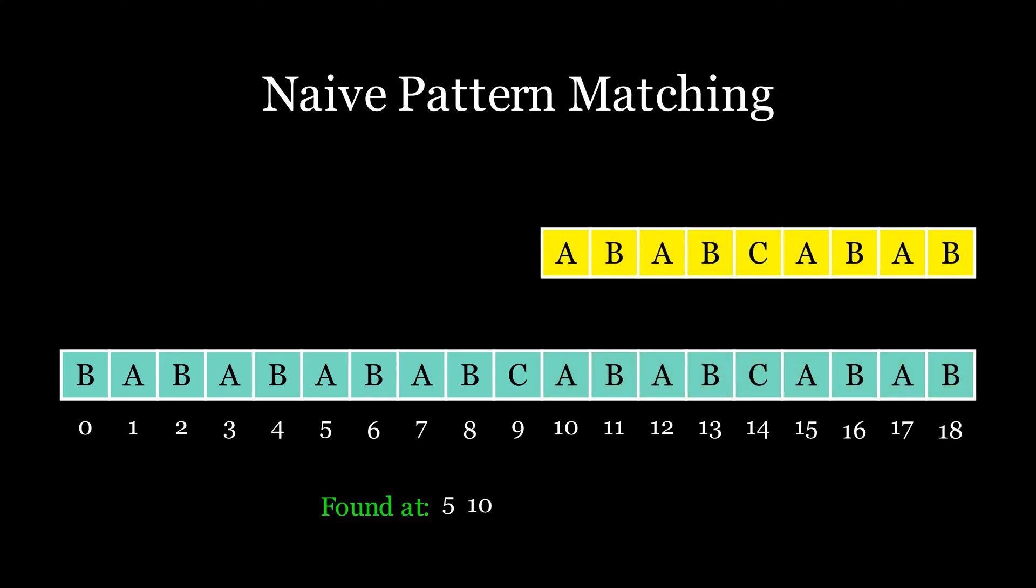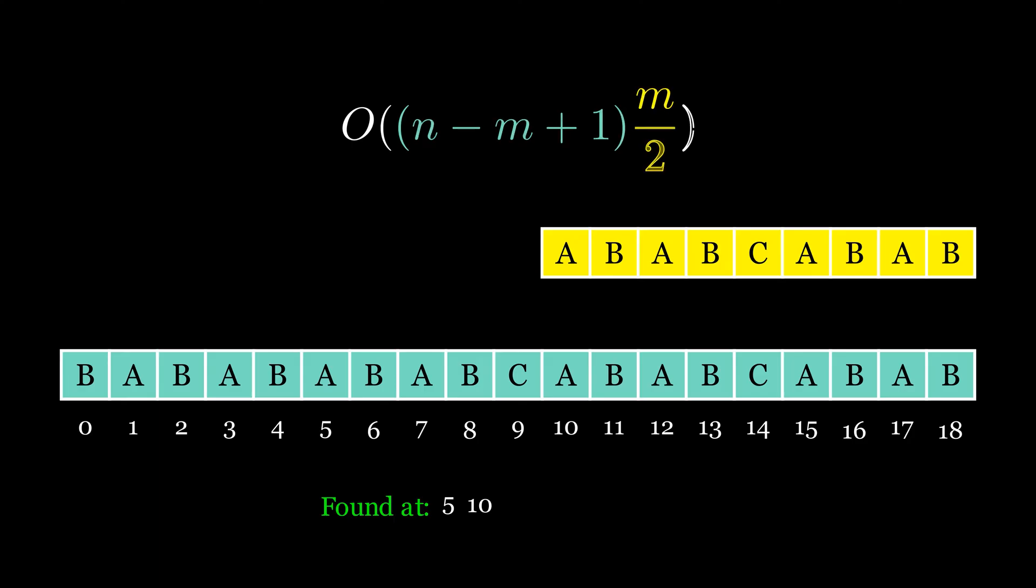The time complexity of this approach is O times m divided by 2. Here the pattern travels over the text, and in each iteration, on an average, it compares characters. Simplifying this will give the complexity O of m times n.